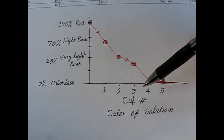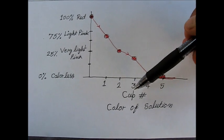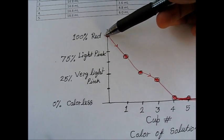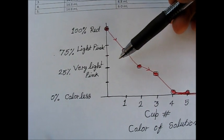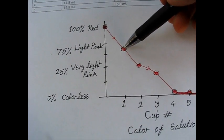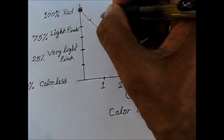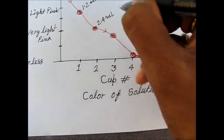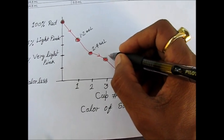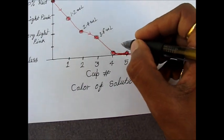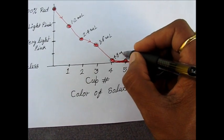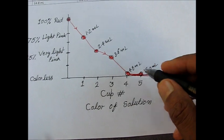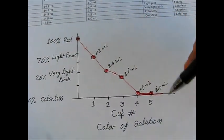We can make a graph from this oxidation reaction with the number of cups on the x-axis and color intensity on the y-axis, starting at 100% red. As we added bleach — 1.2 ml, 2.4 ml, 3.6 ml, 4.8 ml, and 6.0 ml of hypochlorous acid solution — the color decreased immediately to colorless in the higher concentrations, while gradually decreasing in the lower ones.